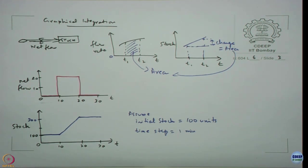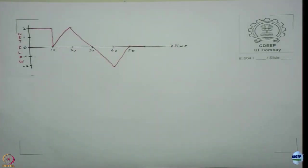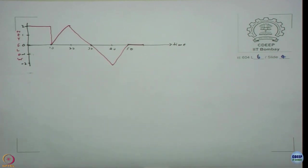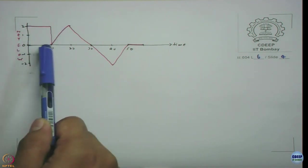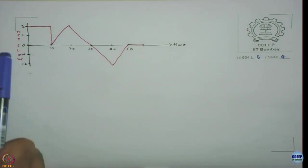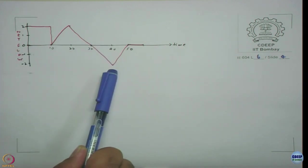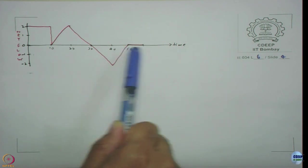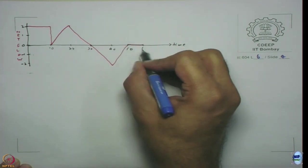Let us look at a more interesting example for graphical integration. For the same example, assume the net flow is now a ramp function — it increases and decreases linearly to time 30, drops to minus 2, then comes back to 0, and remains 0 from time 50 to time 60. The y-axis goes from minus 2 to 2.